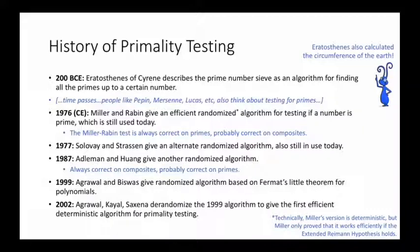In 1976, Miller and Rabin gave an efficient randomized algorithm for testing if a number is prime, and this algorithm is still used today. The Miller-Rabin test is a Monte Carlo algorithm, which is always correct on primes, and probably correct on composites. In 1977, Solovay and Strassen gave an alternate randomized algorithm with similar properties, also still in use today. And about 10 years later, Adleman and Huang gave yet another randomized algorithm. This one is always correct on composites, and probably correct on primes.